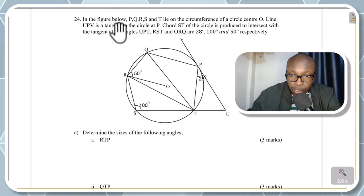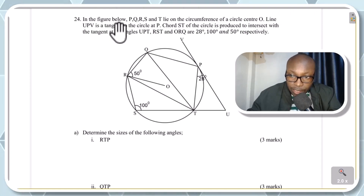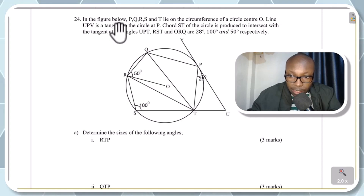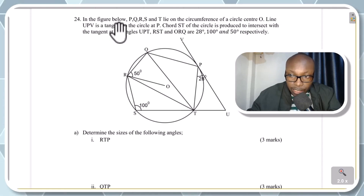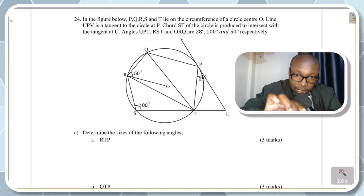In the figure below, PQ, RS, and T lie on the circumference of the circle with center O. Line UPV is a tangent to the circle at P. Chord ST of the circle is produced to intersect with the tangent at U. Angles UPT, RST, and ORQ are 28 and 150 degrees respectively. The diagram shows all the angles indicated.